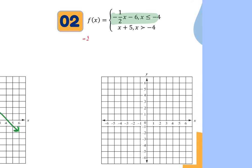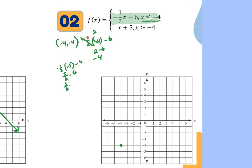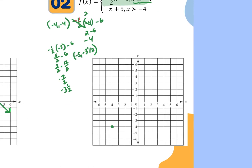Then plug in a point to the left of the boundary — like negative 5 or negative 6 — since the condition is x less than negative 4. For negative 5: negative one half times negative 5 minus 6 equals five halves minus twelve halves, which is negative seven halves, or negative 3.5. So negative 5, negative 3.5 is the next point. You could also use the slope from that coordinate point — the slope is negative one half, so go down 1 and right 2, or up 1 and left 2.